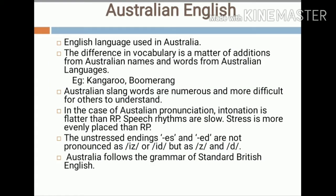The next variety of English is Australian English, a major variety of the English language used throughout Australia. Although English has no official status in the constitution, Australian English is the country's national and de facto official language as it is the first language of the majority of the population. The difference in vocabulary is largely a matter of additions from Australian place names and words from Australian indigenous languages.